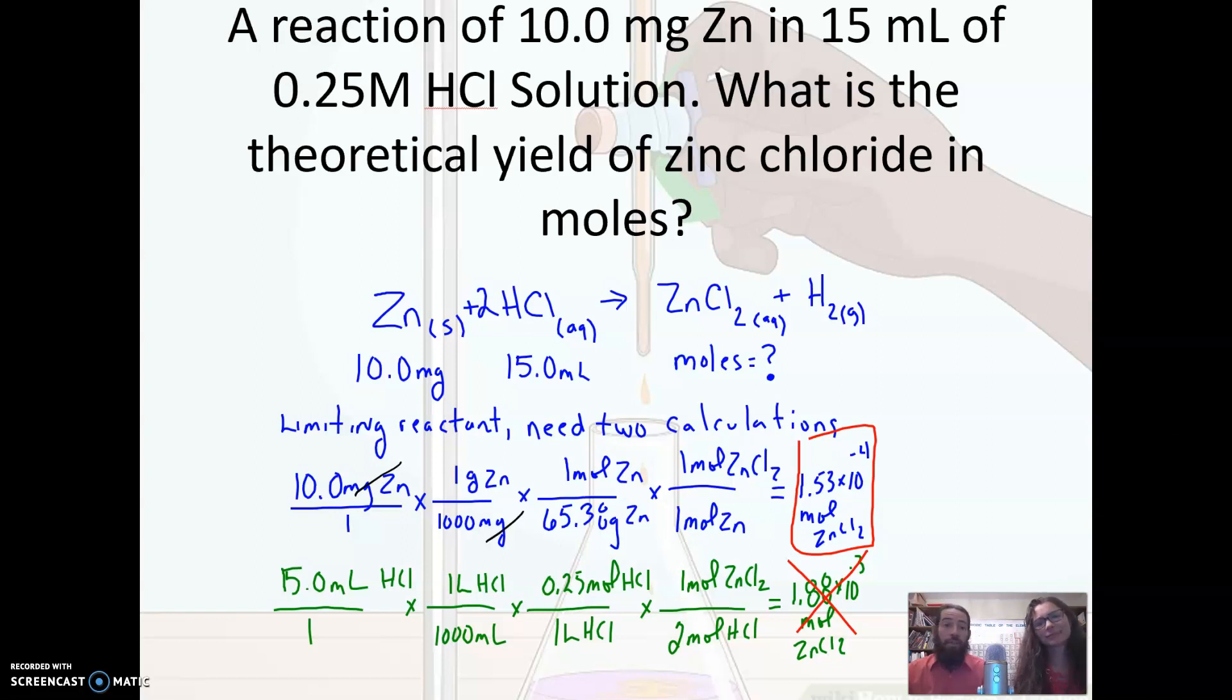So we have our moles of zinc, and then we just do the mole-mole relationship to the zinc chloride, and that's based on the balanced equation. This is a one-to-one relationship. So we've got the moles of zinc chloride at 1.53 times 10 to the negative 4. That's if all of the zinc can react, and we don't know yet.